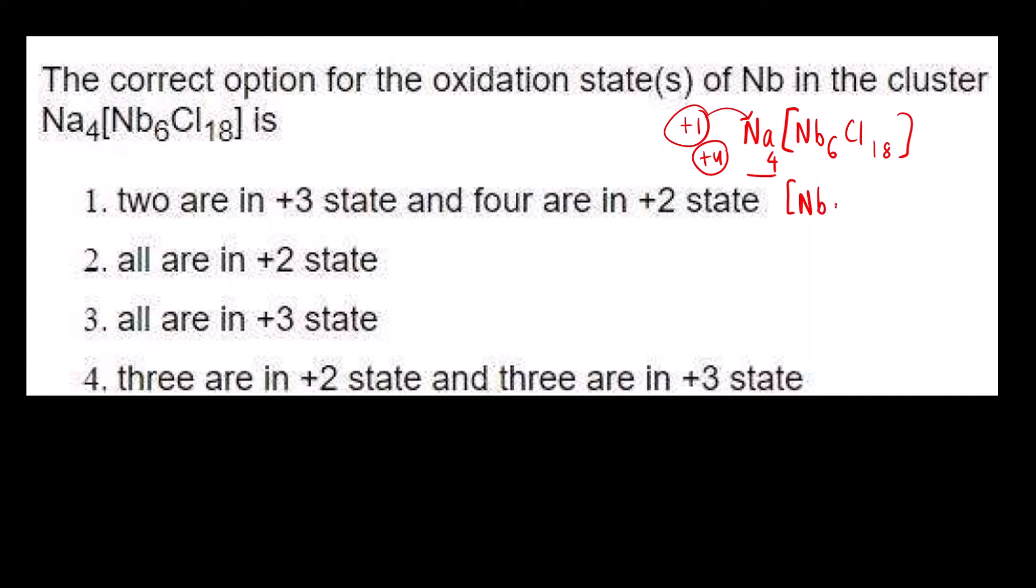The charge on the complex ion will be 4 minus, right? Because the overall charge is 0. Let's say niobium oxidation state is x. Six niobium atoms, so 6 into x plus 18 into chlorine. We know halogens charge is minus 1. Oxidation state is minus 1 which is equal to minus 4.